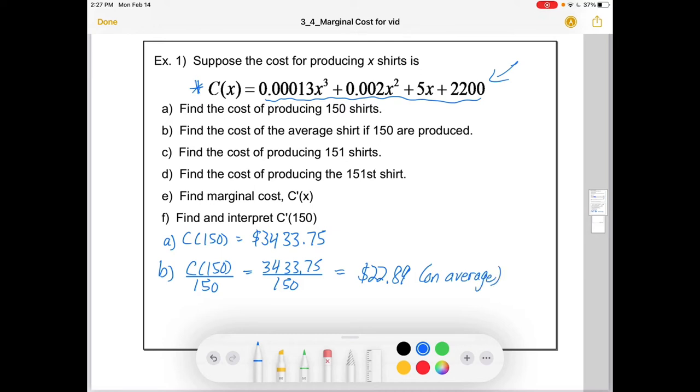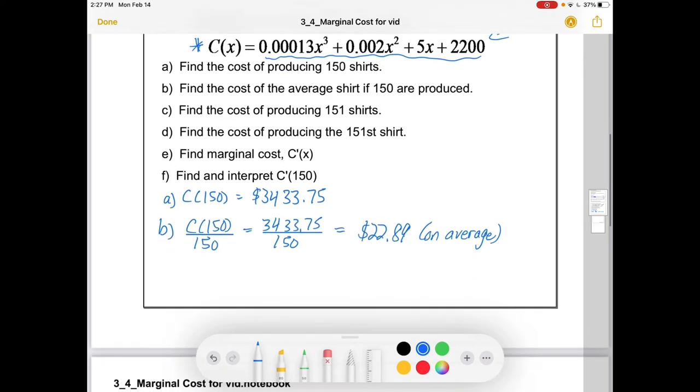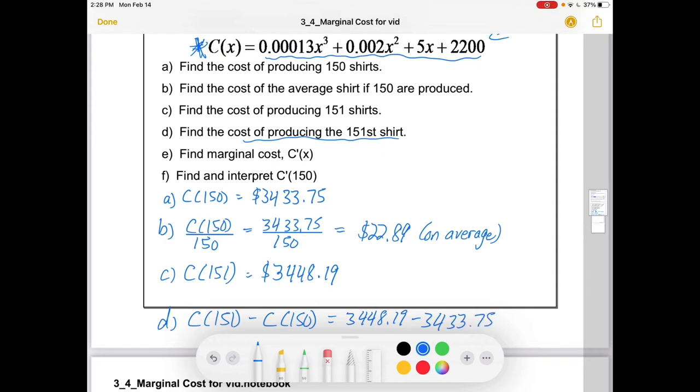So you might say, should we be producing more of them or less of them if we want to bring our costs down? And to do that, let's find the cost of producing the next shirt. So first we have to figure out what the cost of producing all 151 shirts are. If we go one more in this, C of 151, we'd just be subbing into this function. We would get $3,448.19. So if we want to find the cost of producing the 151st shirt, that would just be the cost of producing all 151 minus the cost of producing 150. Or this amount minus this amount. You can see that this is painful, right? But it is essentially just arithmetic that we're doing here. So we subtract them off and the 151st shirt costs $14.44.